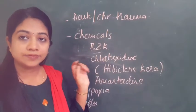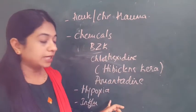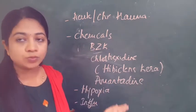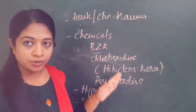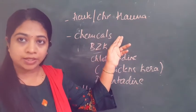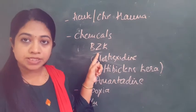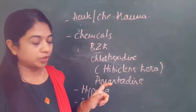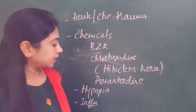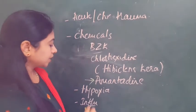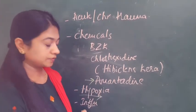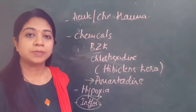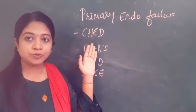Corneal edema secondary to trauma, chemicals, hypoxia, or inflammation shares common features: the edema is stromal, can be central or diffuse, and is mostly acute in onset. Specific causes include trauma to the endothelium; chemical toxicity from benzalkonium chloride (a preservative in most eye drops) or chlorhexidine — the latter called Hibitane keratopathy; systemic drug amantadine; hypoxia in contact lens users; and endotheliitis seen in herpes simplex keratitis.